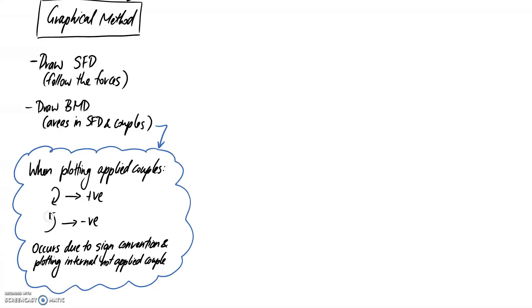The opposite case is when you have an anti-clockwise couple applied to your beam - you need to plot it as a negative on your diagram. The positive one means it's going to push up on the diagram, negative means it's going to pull down.